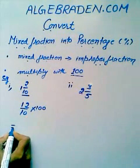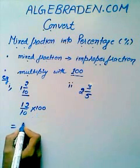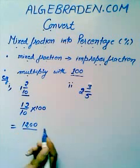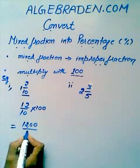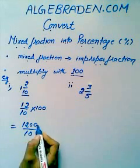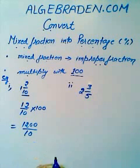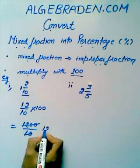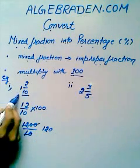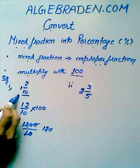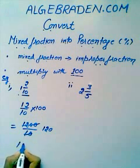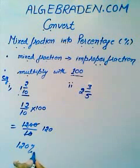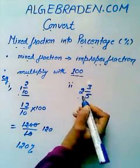It gives us 12 × 100 = 1200 over 10. Now divide the numerator with the denominator. It gives us 120. So the mixed fraction, when converted into percentage, gives us 120%.